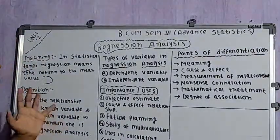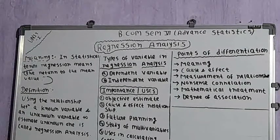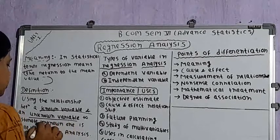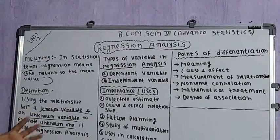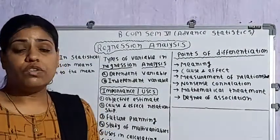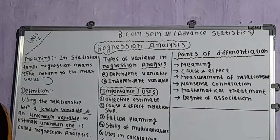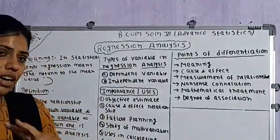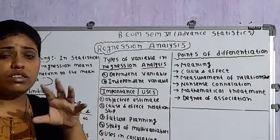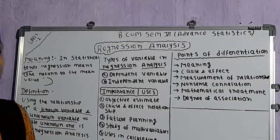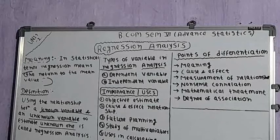The definition of regression given by Stockton and Clark states: using the relationship between a known variable and an unknown variable to estimate the unknown one is called regression analysis. In other words, regression analysis is a statistical tool used to measure the relationship between two variables — one known and one unknown — and on the basis of the known variable, we try to estimate the value of the unknown variable.